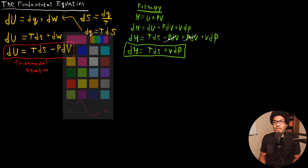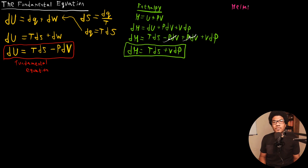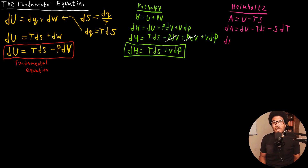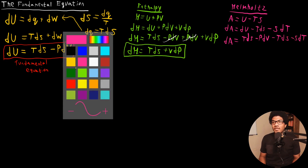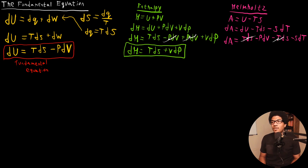Let's look at the Helmholtz energy. Our definition for the Helmholtz energy is A = U - TS. Taking the differential gives dA = dU - TdS - SdT. Then we plug in our fundamental equation for dU, and we get dA = TdS - PdV - TdS - SdT. The TdS terms cancel out, so we end up with the expression for the Helmholtz energy: dA = -PdV - SdT.